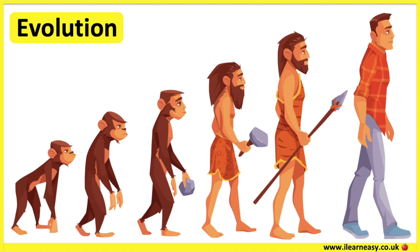So how does evolution happen? Living things with useful adaptations survive and reproduce. The offspring inherit these adaptations and develop their own adaptations through mutations. This process continues over time and the adaptations become focused to the needs of the environment.